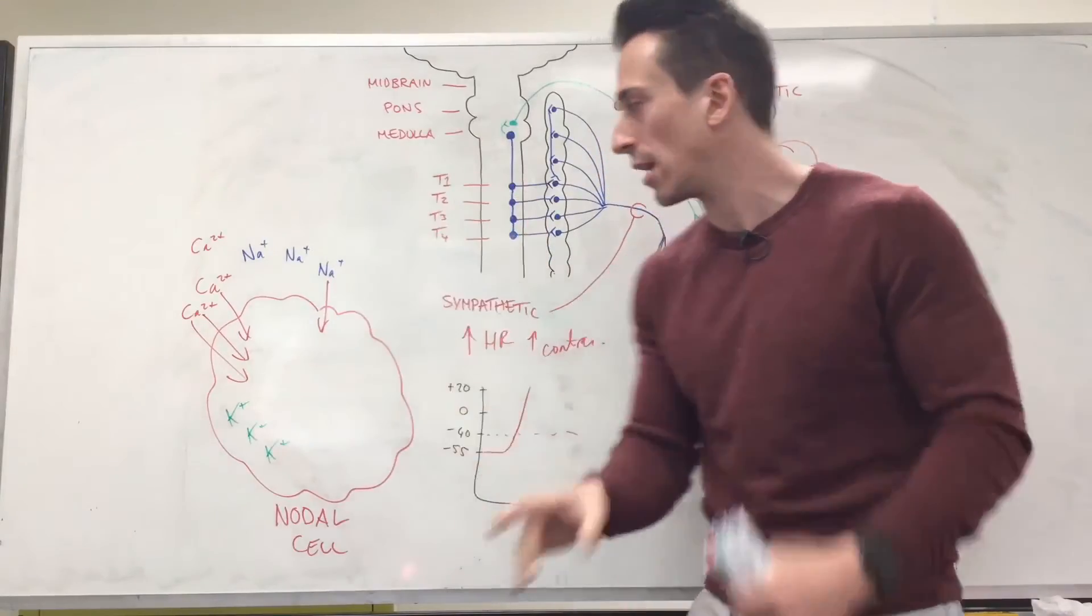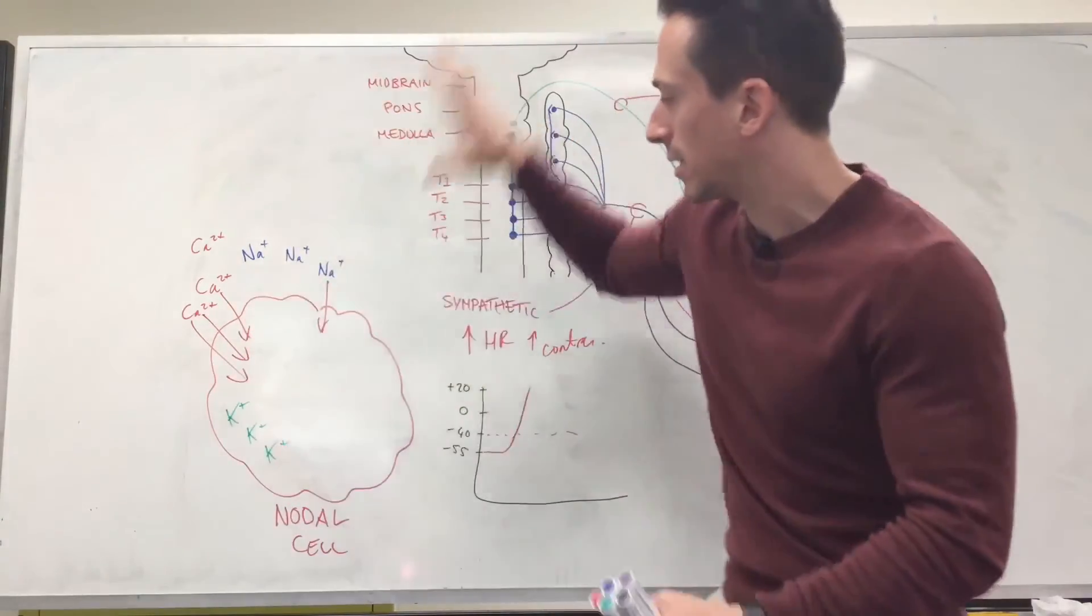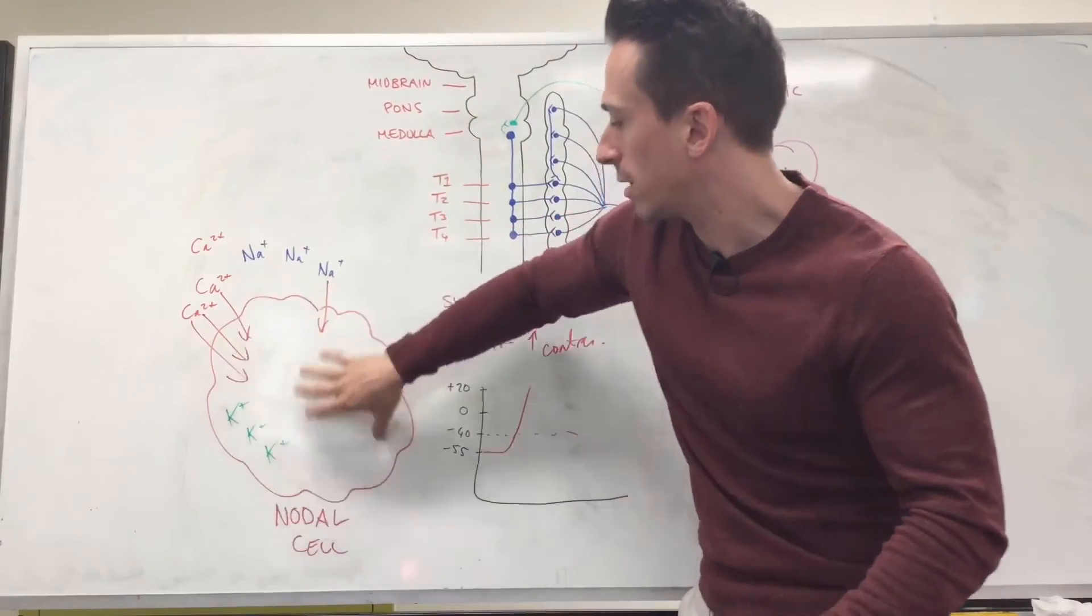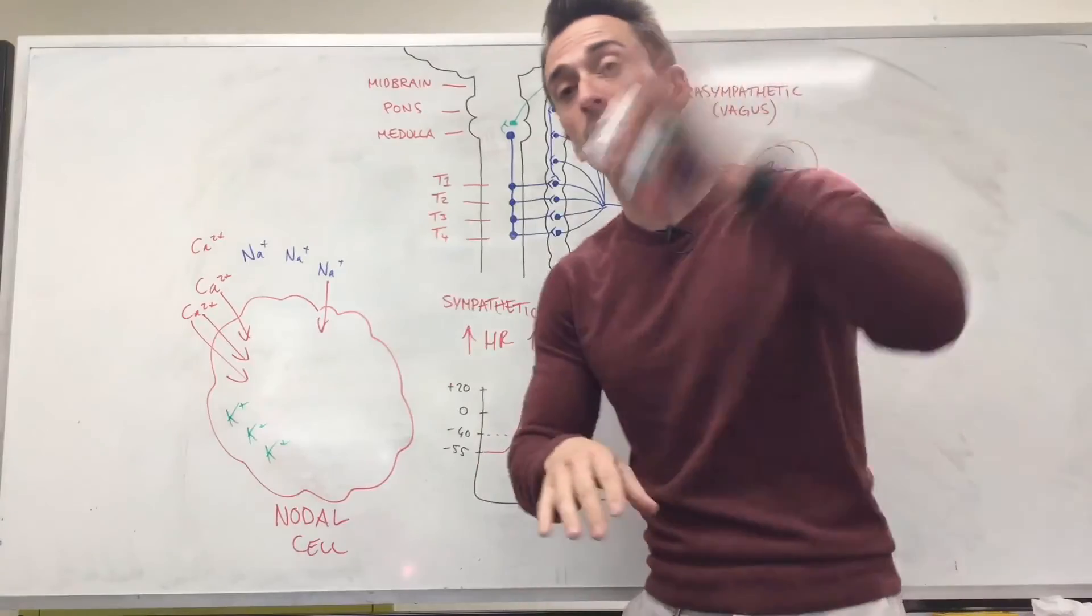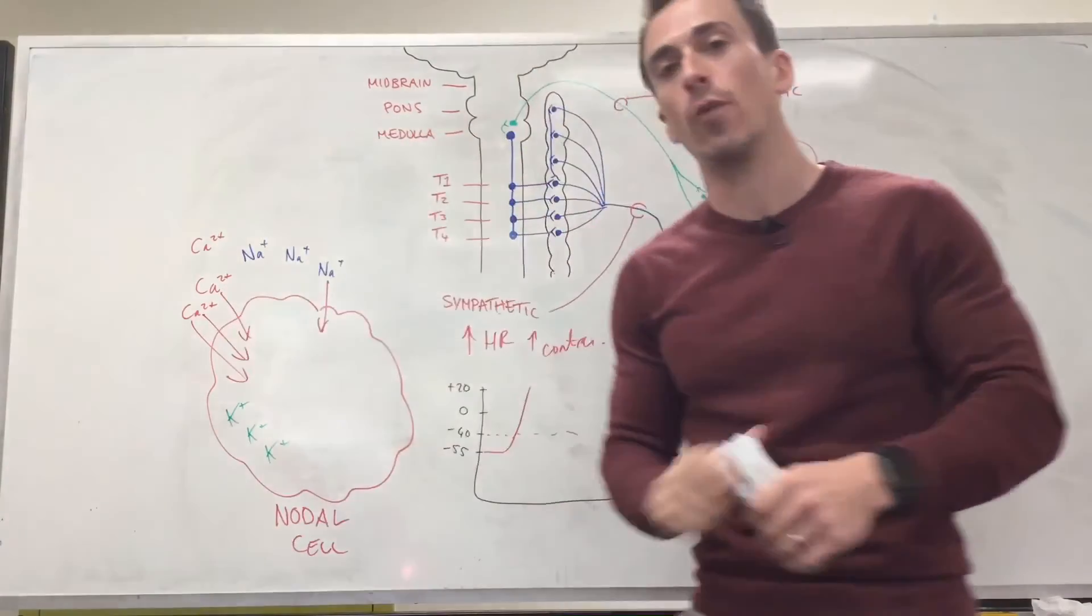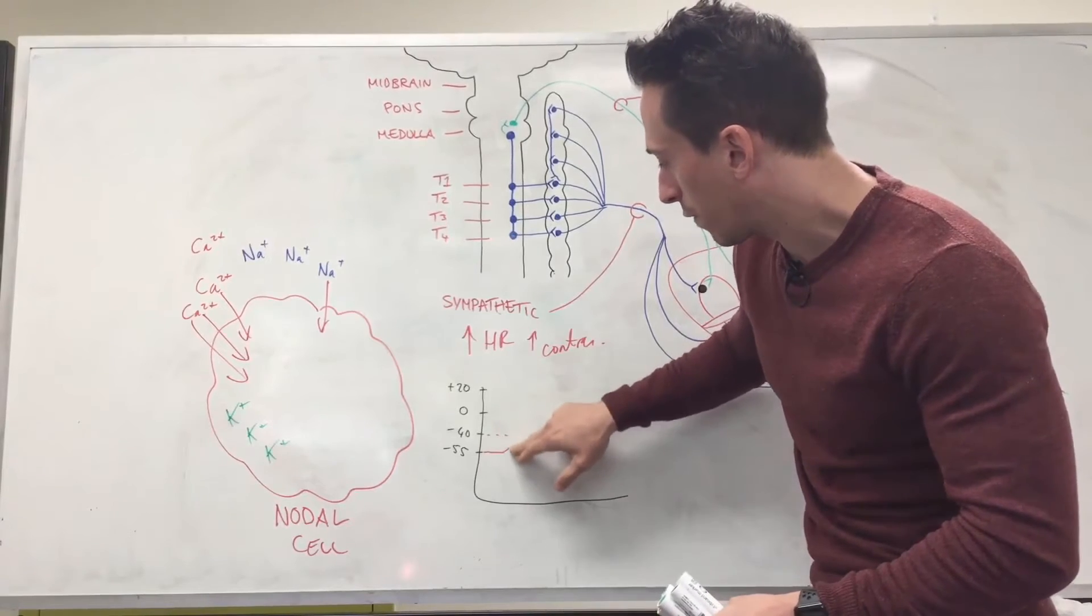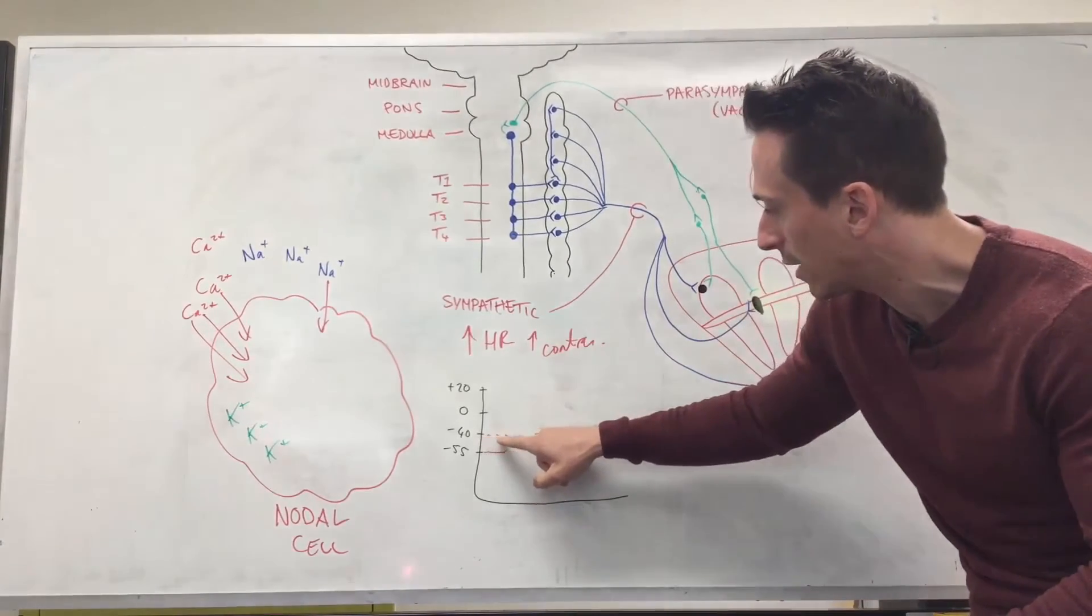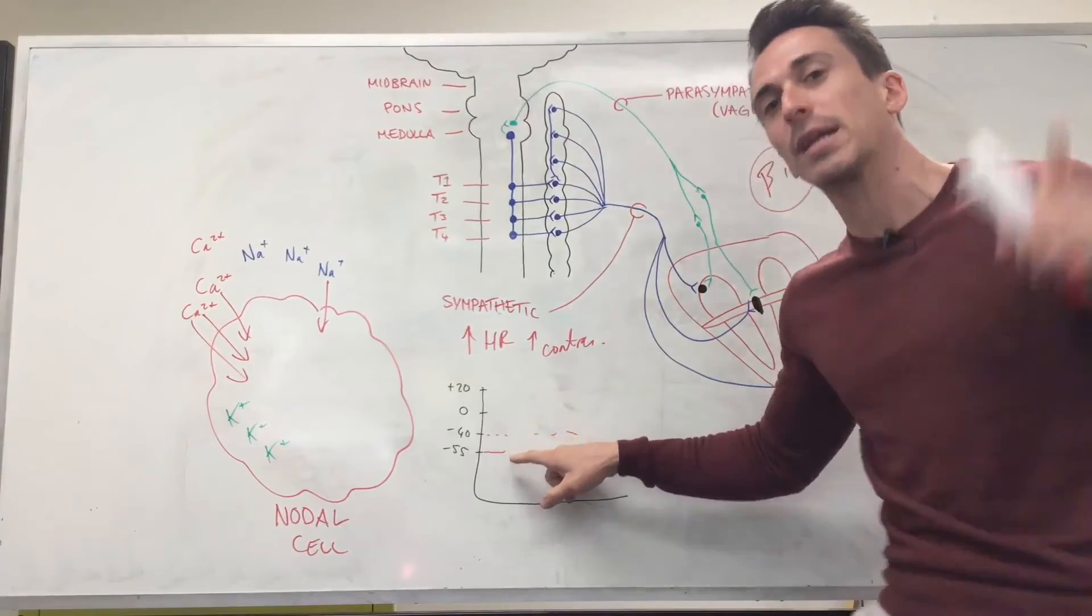When you think about this, how could it tell this nodal cell to slow its firing down? I told you to increase it, more positive things need to go in. So what do you think to decrease it? Remember, in order for it to send a signal, it needs to hit negative 40, so it needs to become positive inside. But to slow it down, to make it harder to send a signal, what you could do is send positive things out.